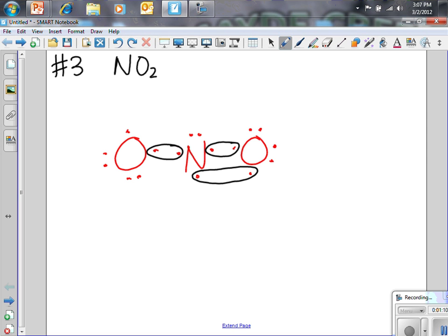So if I go ahead and draw this now, I'll have an oxygen with five valence electrons, unpaired, and a single bond to my nitrogen, and a double bond to my other oxygen.